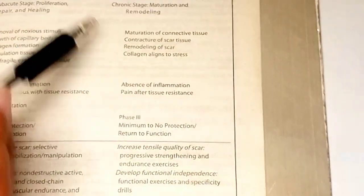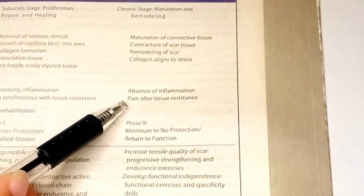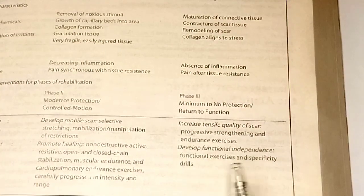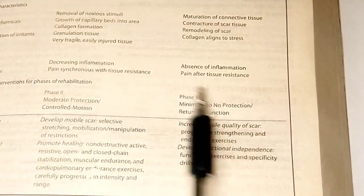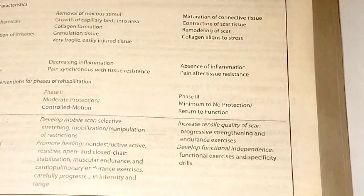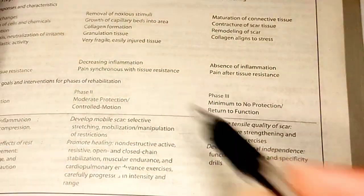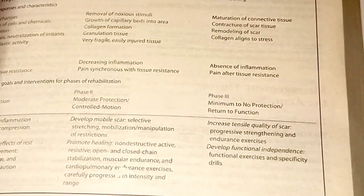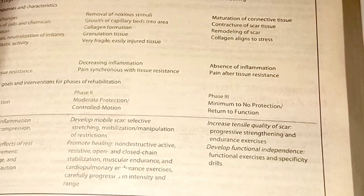The clinical signs in the chronic stage include absence of inflammation, and pain is felt after the tissue resistance. In the late subacute and chronic stage, pain is felt approximately halfway through the tissue resistance. For physiotherapy goals and interventions — Phase 3 — there is minimum to no protection. In this stage the patient is returned to function, meaning the patient regains their original functional capability.